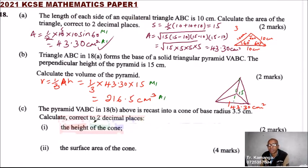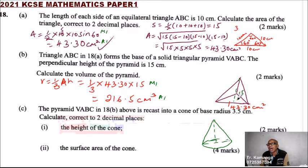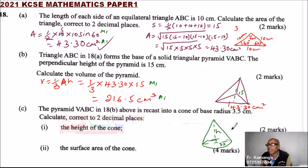We look at Part C. The pyramid VABC from 18B is recast into a cone of base radius 3.5 centimeters. Find, correct to two decimal places, the height of the cone. The material that was used to make the pyramid was remodeled to make a cone with radius 3.5 centimeters. We are required to find the height.